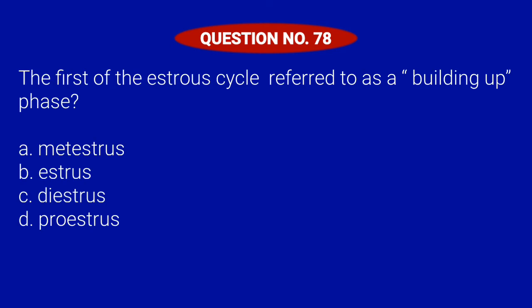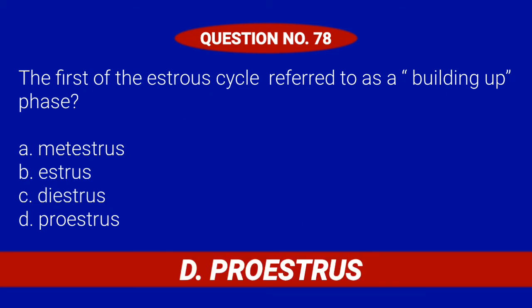Question number 78. The first phase of the estrus cycle, referred to as a building up phase. Letter A: Metstress. Letter B: Estrus. Letter C: Diestrus. Or Letter D: Prostress. Correct answer is Letter D: Prostress.